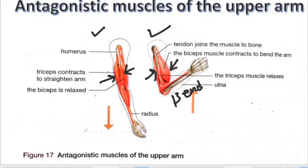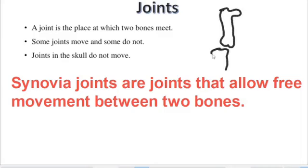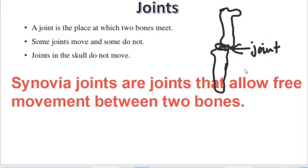Let us now look at joints. A joint is a place at which two bones meet. So where two bones meet, we call it a joint. We also have joints that we call synovial joints.